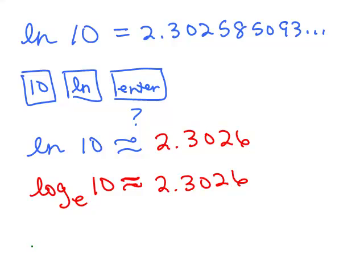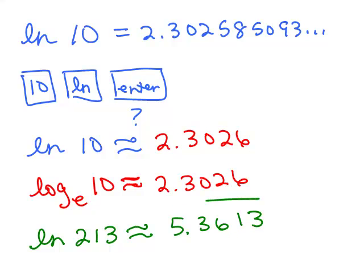Try one more. How about the natural log of 213? Approximate it to four decimal places. Go ahead and try that on your calculator. I got 5.36129, so it's going to be 5.3613. So that's about the common log and the natural log.